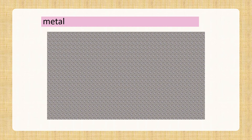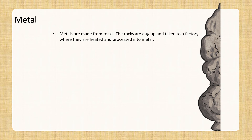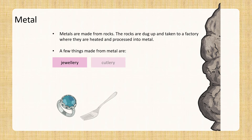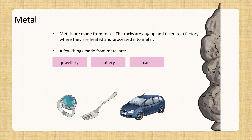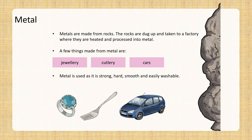Metal — that's another very useful and very strong material. Objects as tiny as a nail and as big as an airplane are made of metal. Metals are made from rocks. The rocks are dug up and taken to a factory where they are heated and processed into metal. A few things made from metal are jewelry, cutlery, and cars. Metal is strong, hard, smooth, and easily washable.